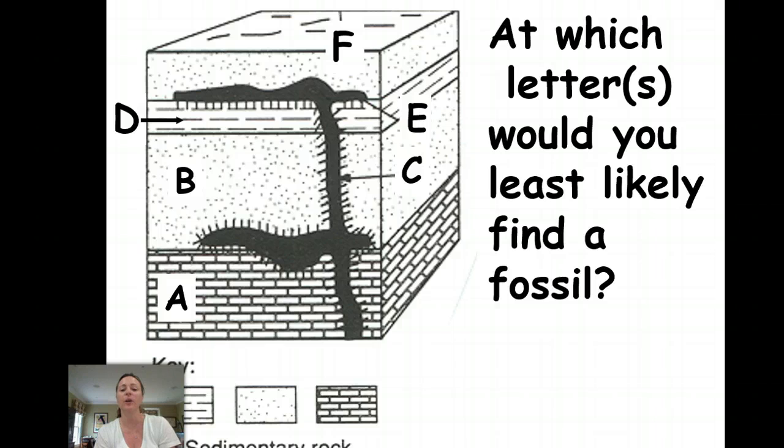At which letters would you least likely find a fossil? Think about that. Which type of rock do we know have fossils? Well, all of these layers are known to be sedimentary rocks. The key tells you that right down here. So then where would we least expect to find a fossil? We would look to see letters C and E because that's where the igneous intrusion created the contact metamorphism and the metamorphic rock that's going to surround that igneous intrusion.